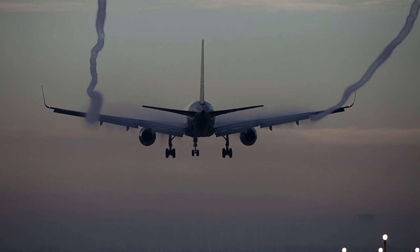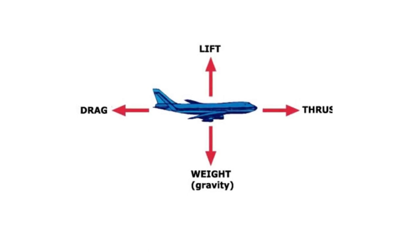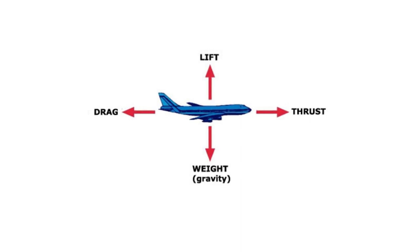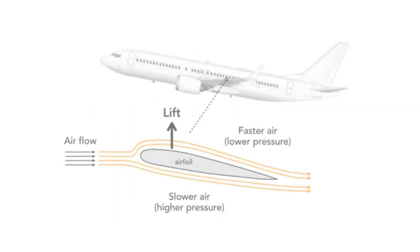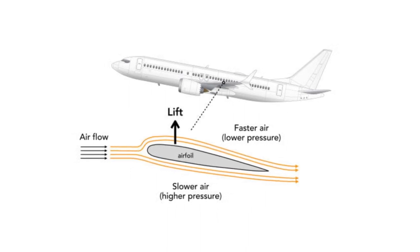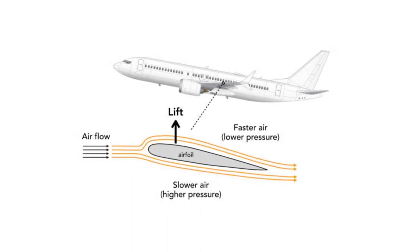Let us understand what wingtip vortices are that generate wake turbulence. To remain afloat in air, an aeroplane has to produce lift to balance its weight — so the heavier the aeroplane, the more lift it needs to produce. Lift is produced by making airflow pass over wings of an aerofoil shape. When air passes over the wing, it accelerates. The speed of the air increases, which results in a drop in pressure as per Bernoulli's theorem. So there is higher pressure below the wing and lower pressure above the wing, and this difference in pressure causes a net upward force called lift.